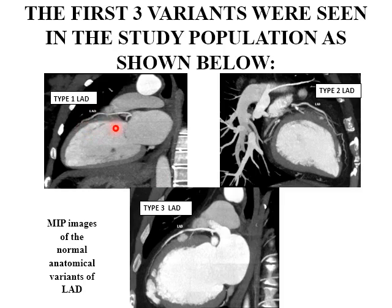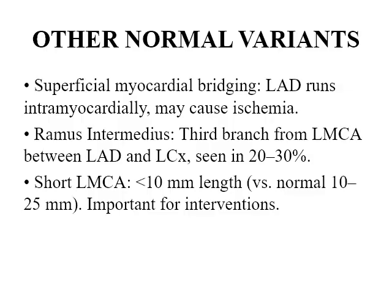We can see type 1, type 2, and type 3 on the images. Other normal variants include superficial myocardial bridging, in which the left anterior descending artery runs intramyocardially, which may cause ischemia. Another variant is the ramus intermedius, the third branch from the left main coronary artery, which runs between the left anterior descending artery and the left circumflex artery, seen in 20% to 30% of cases. There is also the short left main coronary artery, in which the length is less than 10 mm.